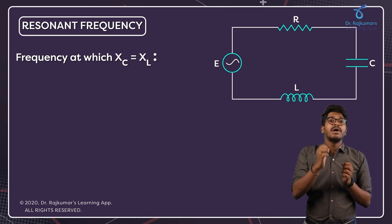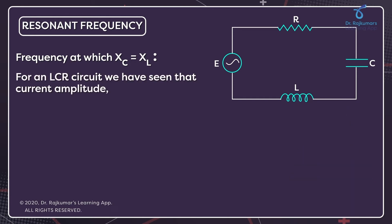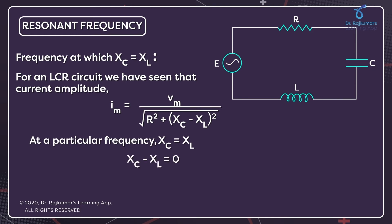If we consider the current equation, the amplitude of the current IM is equal to VM divided by the square root of R² plus (XC minus XL)². Since XC minus XL will be equal to zero because XC is equal to XL, the impedance is minimum at this particular point. The impedance Z will be equal to R, meaning it would become a completely resistive circuit.